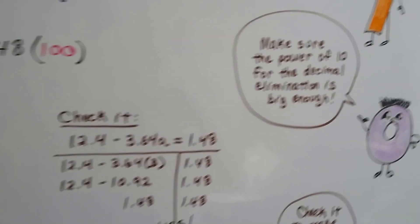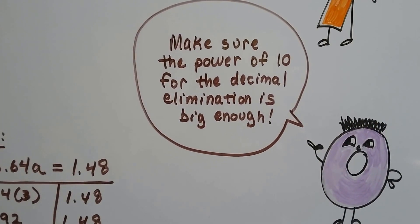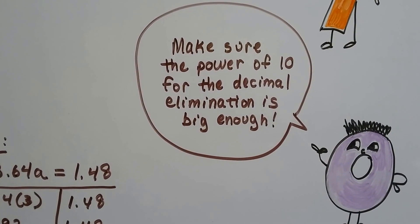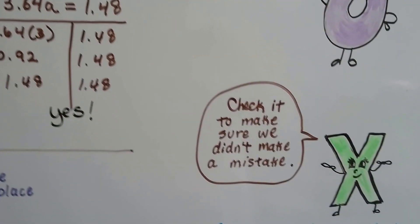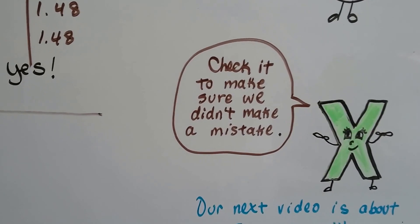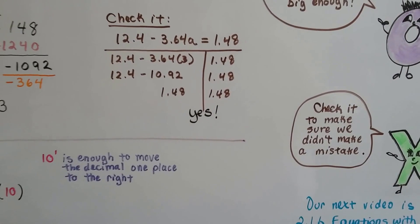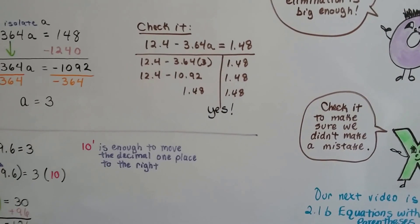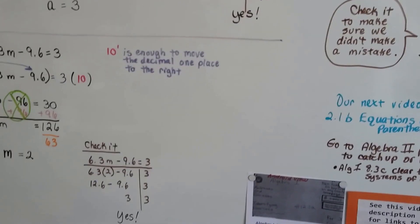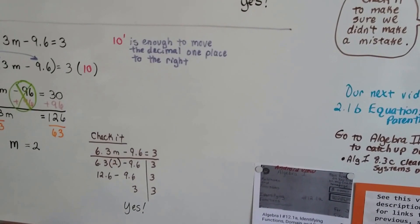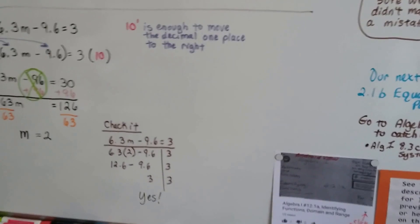We just need to remember to make sure the power of 10 that we're using to eliminate that decimal is big enough to eliminate all of them in the entire equation. You just want to make sure you check it to make sure there's no mistakes. Because sometimes you could do a multiplication too quick or division too quick or have a wrong sign. So you want to check it just to absolutely make sure. That could increase your grade a lot just by checking your equations.